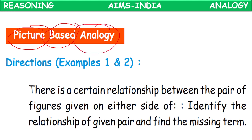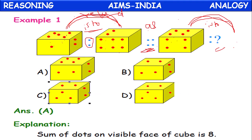Picture-based analogy means the first two objects will be some kinds of pictures. The third one also is some kind of picture. With the help of the relationship between one and two, we have to identify the fourth picture. Here the first picture is related to the second picture as the third picture is related to which picture? If you observe: this cuboid has three visible faces — one dot on the first face, two dots on the second face, and five dots on the third face. Altogether it has eight dots.